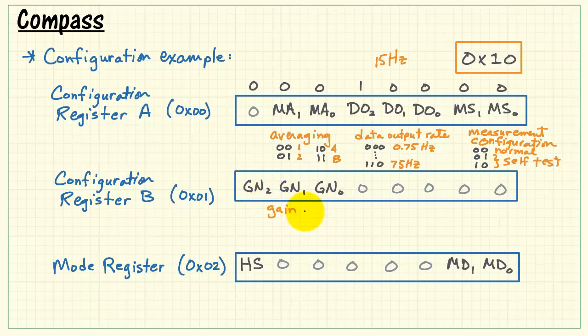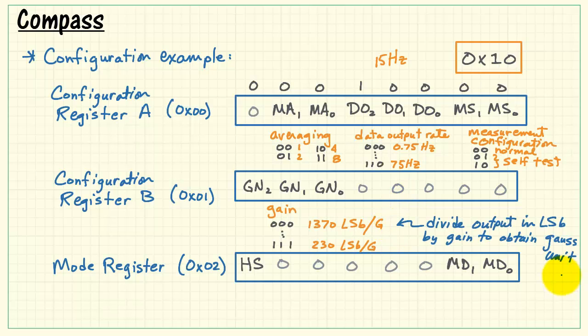Let's look at configuration register B. This is where we can take care of the range setting. We can specify a gain of 1370 least significant bits per gauss down to 230. You want to divide the output that you read directly from the compass by this gain in order to obtain the units in gauss. You want to use the highest sensitivity for compassing, so I'll go ahead and use the gain of 0, 0, 0 for that bit field.